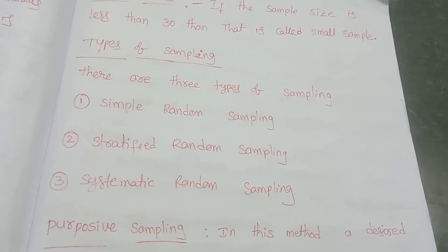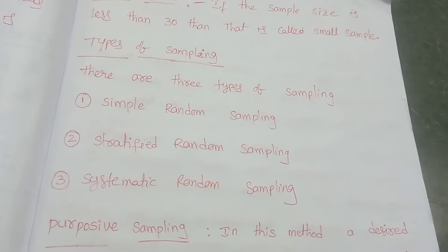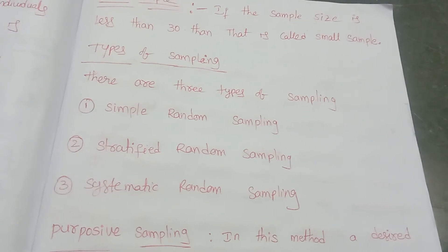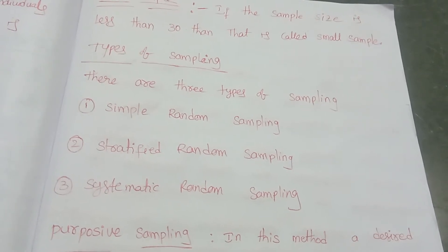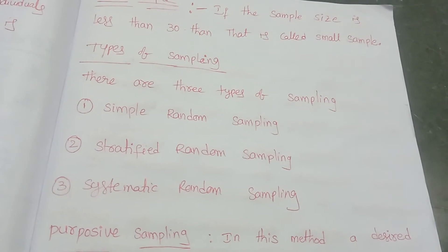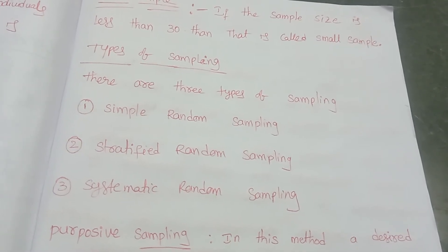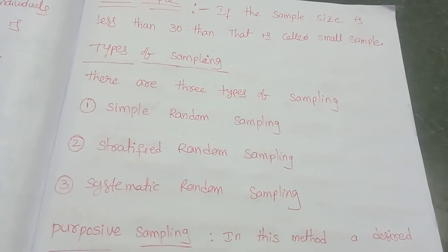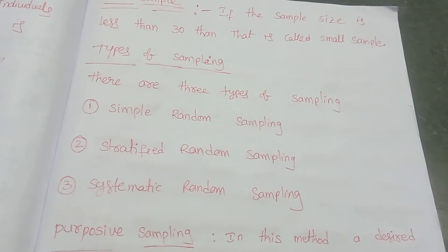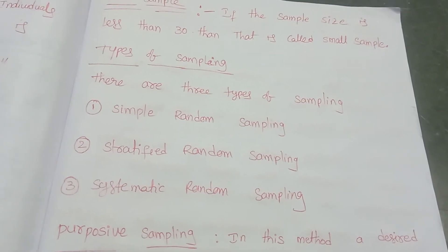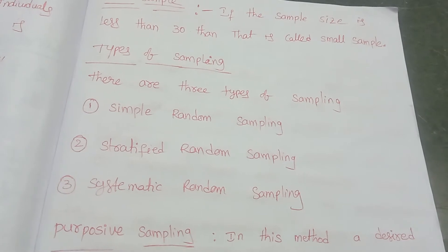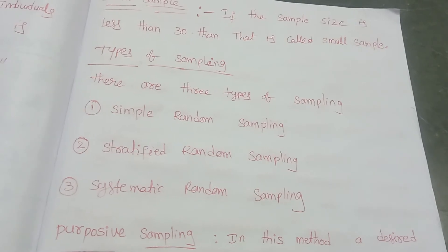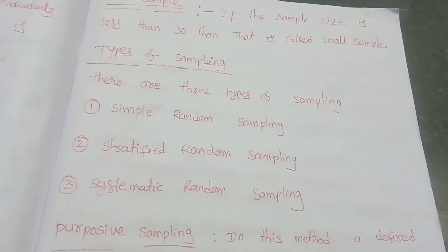Why do we go for the sample method? Suppose the population is not available — for example, if I am calculating your class average percentage but students are not attending every day, the population is not fully available. That's why I go for the sample procedure, taking only 10 members who are possible to come all days.